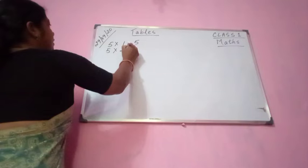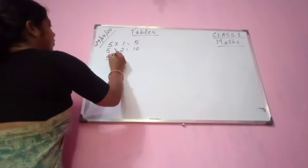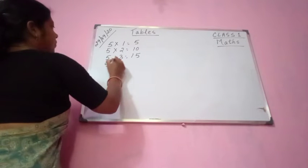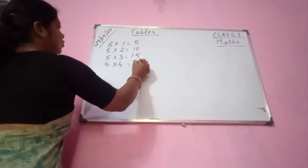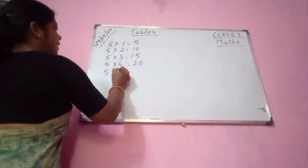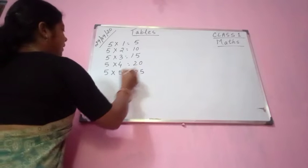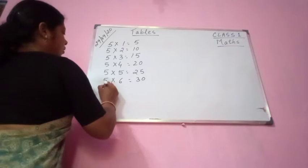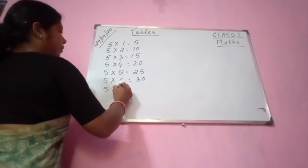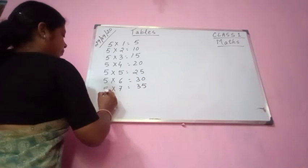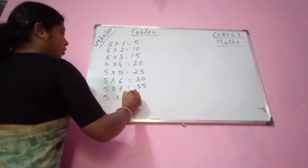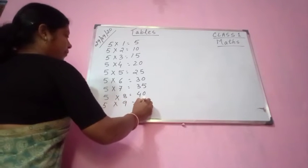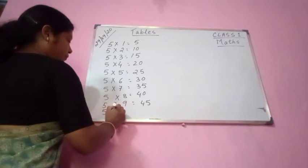5 twos are 10. 5 threes are 15. 5 fours are 20. 5 fives are 25. 5 sixes are 30. 5 sevens are 35. 5 eights are 40. 5 nines are 45. 5 tens are 50.